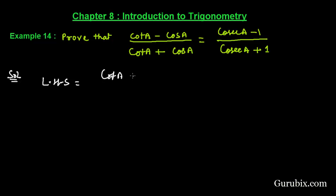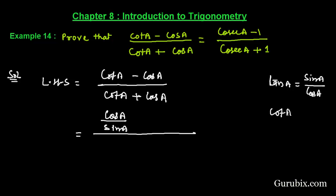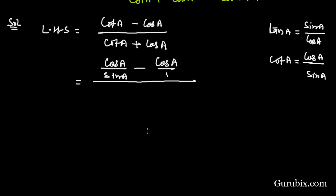The left hand side is (cot a minus cos a) over (cot a plus cos a). Now we shall write cot a as cos a over sin a, because tan a equals sin a over cos a, therefore cot a equals cos a over sin a. So we have (cos a over sin a minus cos a over 1) in the numerator, and (cos a over sin a plus cos a over 1) in the denominator.